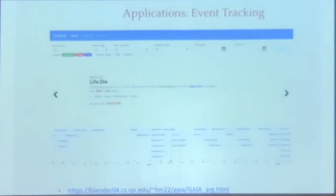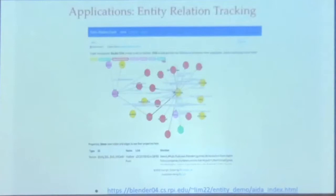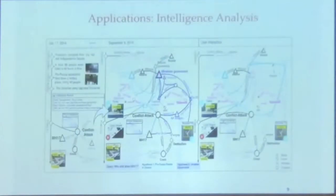You can keep checking a person's activity all the time, check who is related to whom, and what events are related to each other. You can look at who is related to a conflict and check that all the time. Putting things together, we can do automatic intelligence analysis. This is an example showing the MH17 airline crash — from our multimedia and multilingual data, we can construct this graph.